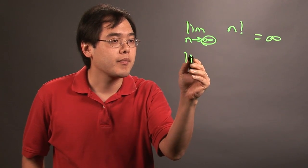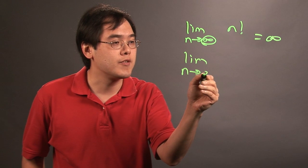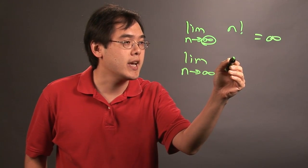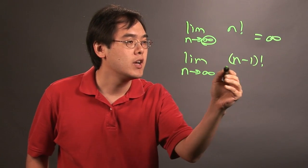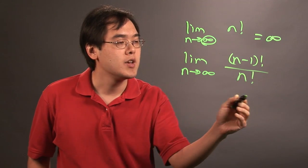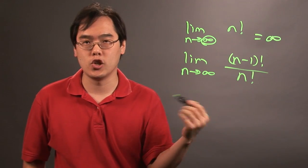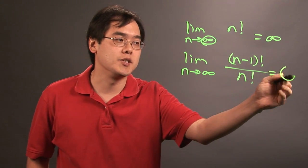Now if you have the limit as n approaches infinity of n minus 1 factorial over n factorial, because this function is larger, this limit ends up being zero.